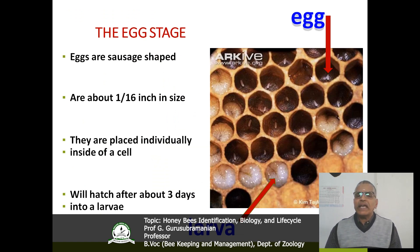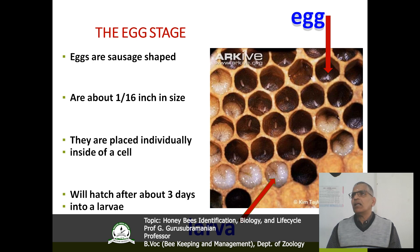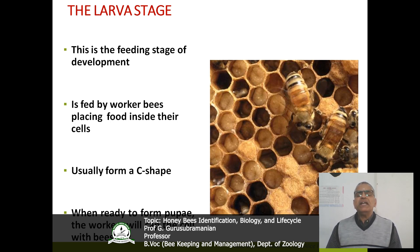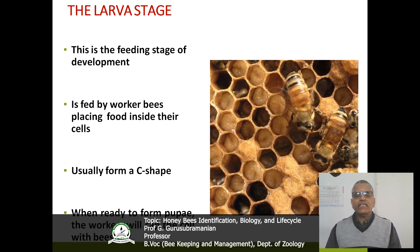Now we will discuss about the egg stage. Normally the eggs are sausage shaped. They are placed individually inside cells by the queen bee, and the incubation period is 3 days — within 3 days the egg becomes larvae. The second stage is the larvae, which is the feeding stage of development. The larvae are fed by worker bees placing food inside their cells. Normally this shell shape is like a C shape. When ready to form pupae, the workers will cap the cell with the help of beeswax.